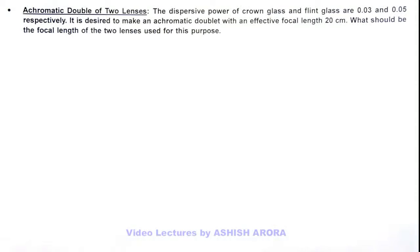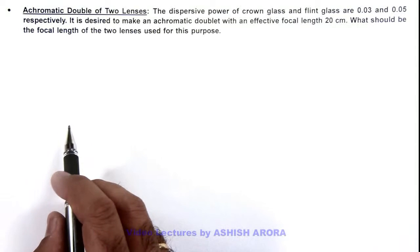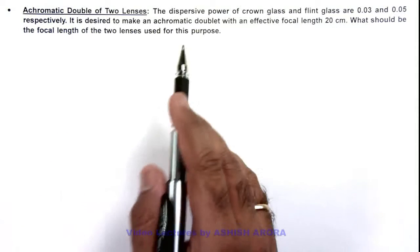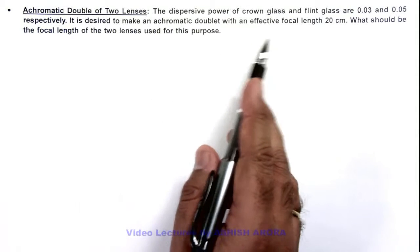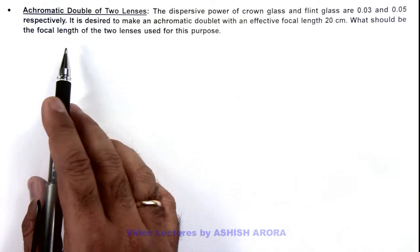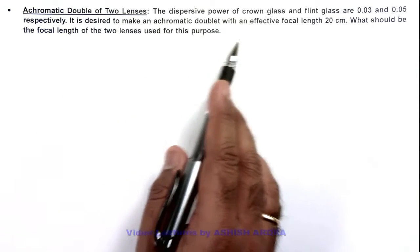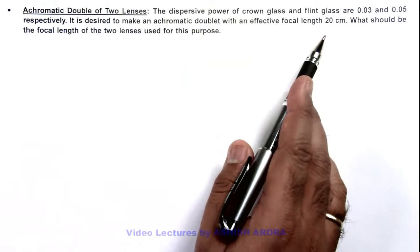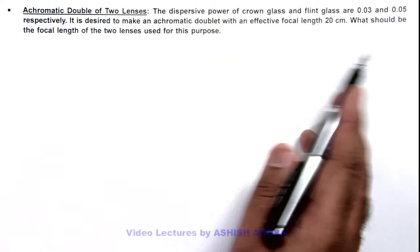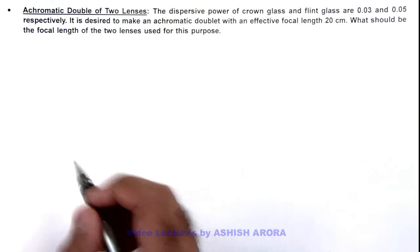In this illustration, we'll demonstrate the achromatic doublet of two lenses. Here we are given that the dispersive power of crown glass and flint glass are 0.03 and 0.05 respectively. It is desired to make an achromatic doublet with an effective focal length of 20 centimeters, and it is asking what should be the focal length of the two lenses used for these two glass lenses.